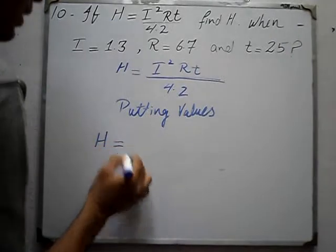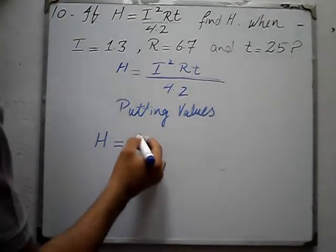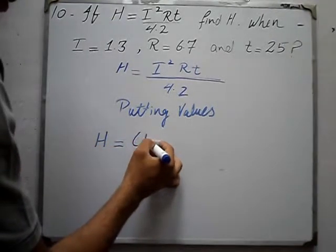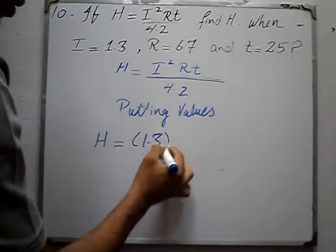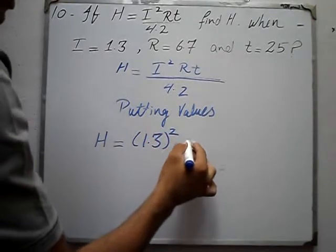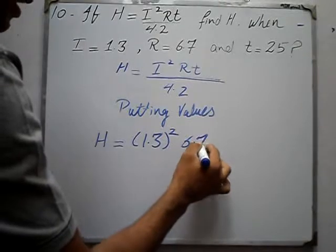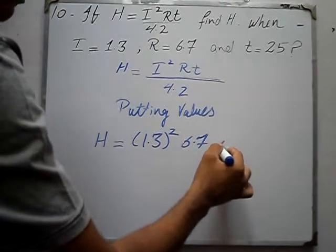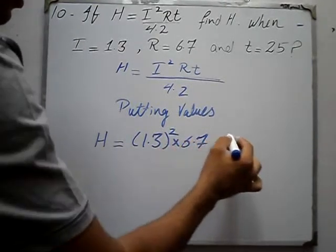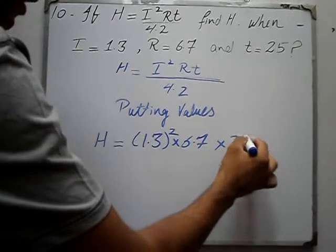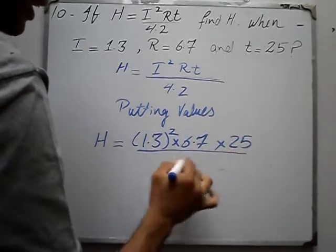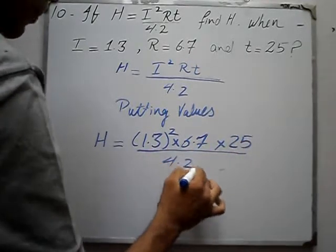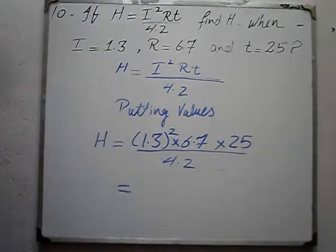H is equal to I, which is 1.3, whole squared. R is 6.7 and multiply it with t, which is 25. Below we have 4.2.